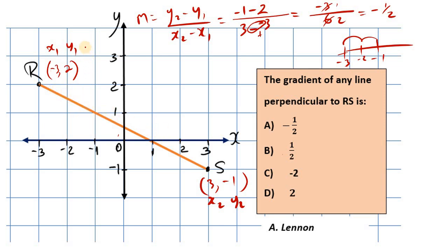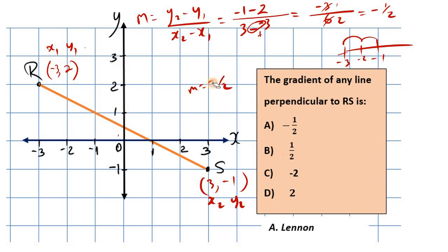Any line parallel to RS will also have the same gradient of negative 1 half — just with different y-intercepts. However, that's not what we were asked. We're asked about a line that's perpendicular, not parallel. The gradient of this line RS is negative 1 half.